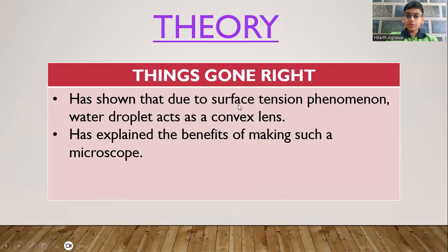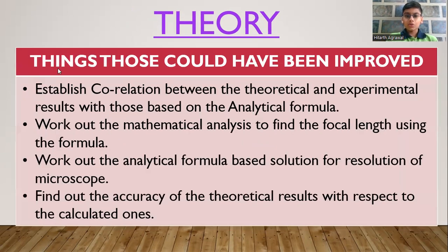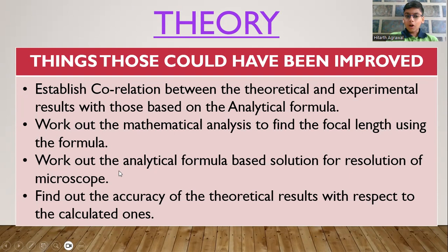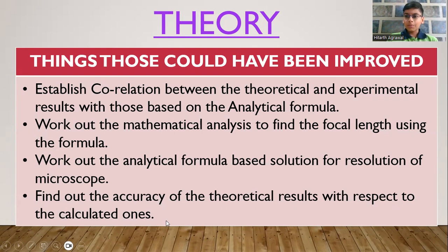Now, moving on to the theory. The things which went right were that she showed that due to the surface tension phenomenon, a water droplet acts as a convex lens. She also explained the benefits of making such a microscope, including economic aspects. The things which could have been improved in the theory were to establish a correlation between theoretical and experimental results based on an analytical formula, to work out the mathematical analysis to find focal length, to provide an analytical formula-based solution for the resolution of the microscope, and to find the accuracy of theoretical results with respect to calculated ones.